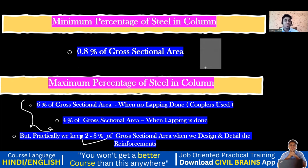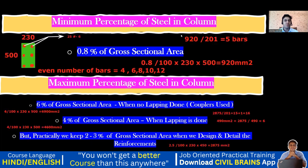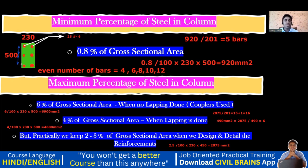One more important rule: the spacing between any two longitudinal reinforcement bars in a column should not be more than 300 mm. This is a detailing requirement from the code book that every structural engineer must know.